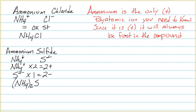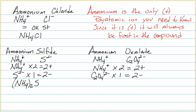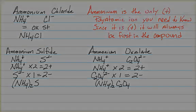Last example: ammonium oxalate. Ammonium is NH₄⁺ and oxalate is C₂O₄²⁻, with a two-minus charge. We need two ammoniums and one oxalate, giving a final formula of (NH₄)₂C₂O₄.